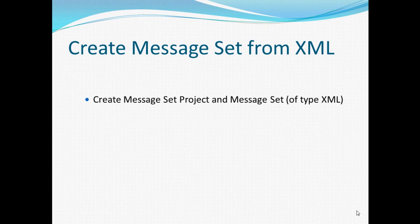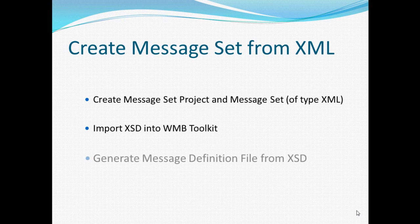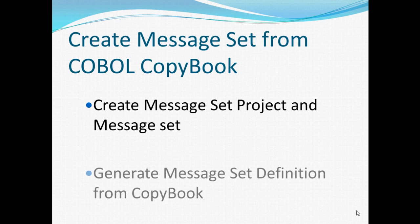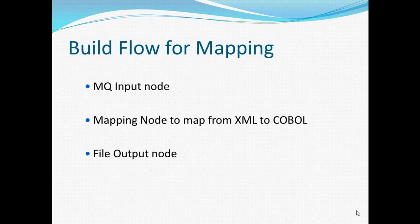To create a message set from XML, first we're going to create a message set project and a message set, then we're going to import an XML schema into our toolkit, then we're going to generate a message definition file from that XML schema. Then to create a message set from a COBOL copybook, we're going to create a message set project and a message set, then generate a message set definition from a copybook. Finally, we're going to build a flow for mapping: we're going to create an MQ input node, then make a mapping node to map from XML to COBOL, and finally we're going to have a file output node.